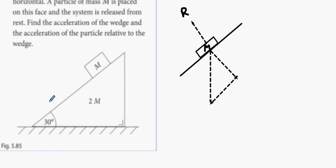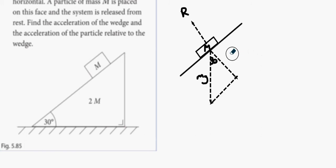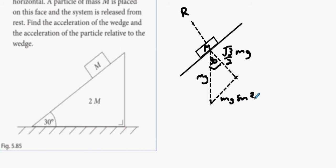We know that this angle is 30 degrees, which means this angle is also 30 degrees. The weight is mg. We know that the perpendicular component is mg cos 30, and cos 30 equals √3/2, so that's (√3/2)mg. The parallel component is mg sin 30, which is (1/2)mg.